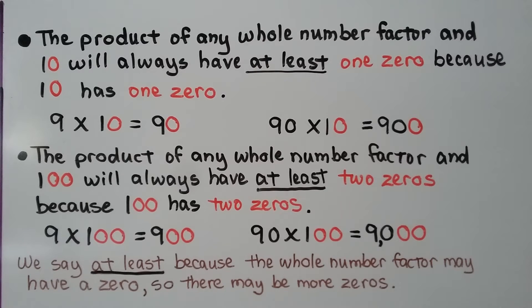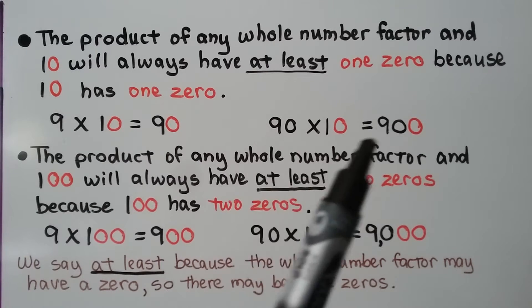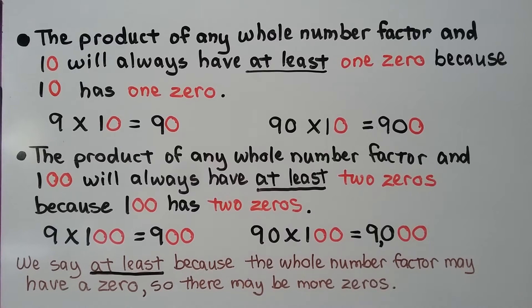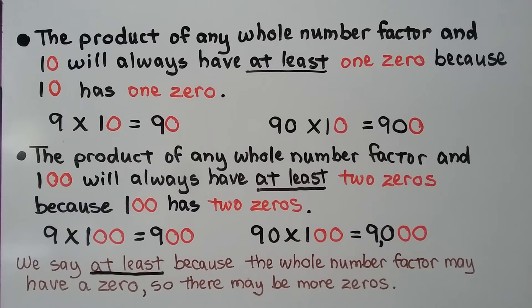The product of any whole number factor and 10 will always have at least one zero, because 10 has one zero. So 9 times 10 equals 90. And 90 times 10 will have two zeros. The product of any whole number factor and 100 will always have at least two zeros, because 100 has two zeros. So 9 times 100 equals 900. But 90 times 100 will have three zeros. We say 'at least' because the whole number factor may already have a zero, creating even more zeros.